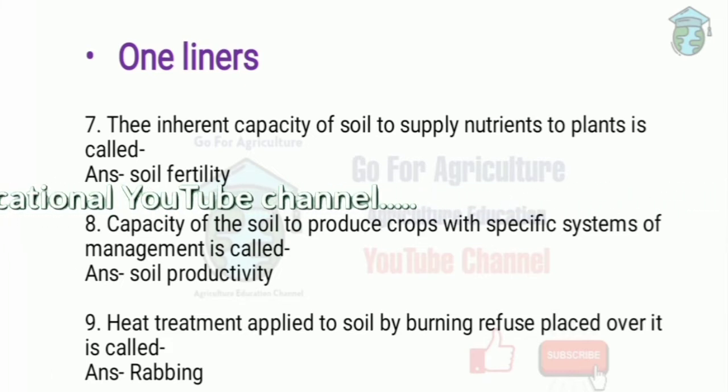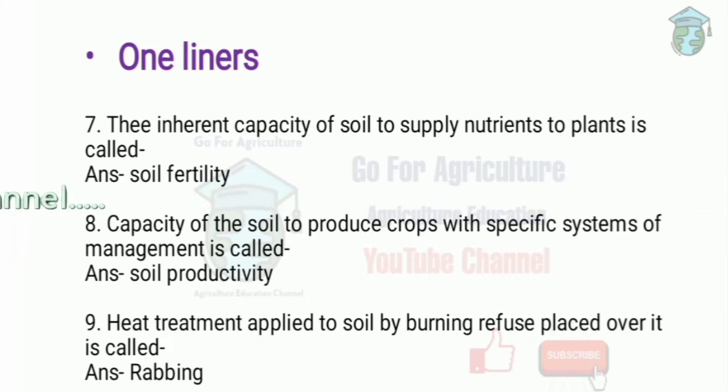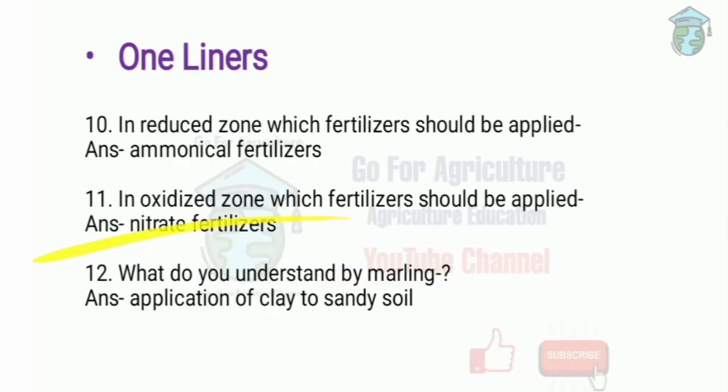The next question is: what is the process called rabbing? Rabbing is a process that means the heat treatment applied to soil by burning refuse placed over it.